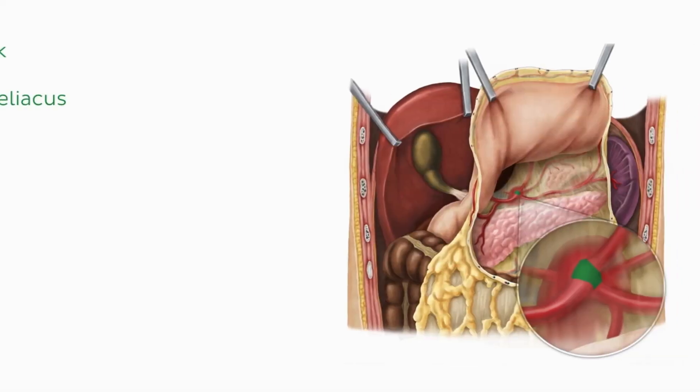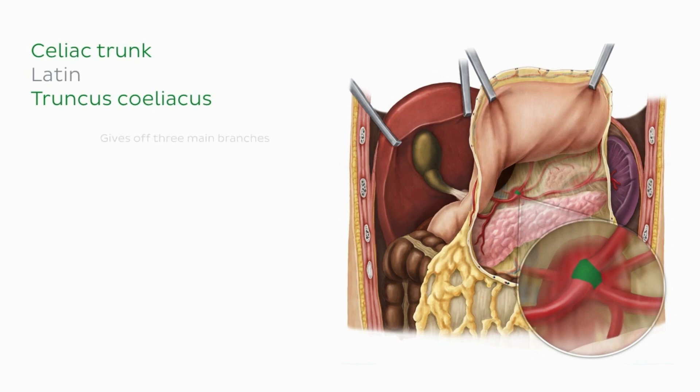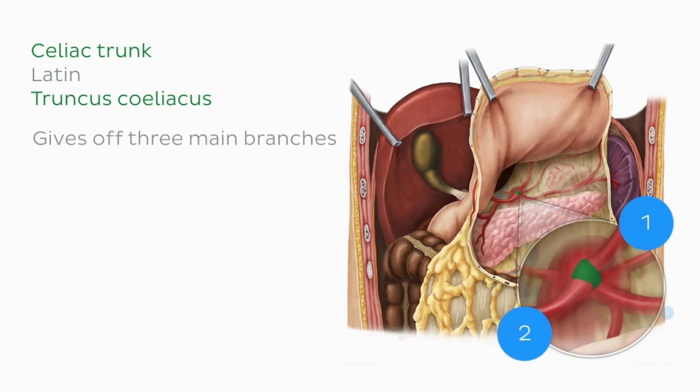We're going to start with the celiac trunk, which is the first solitary branch to sprout from the abdominal aorta. The celiac trunk gives off three main branches, all of which can be found by exploring the omental bursa.